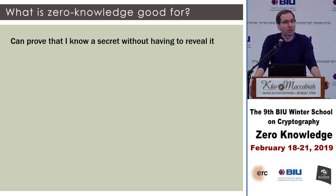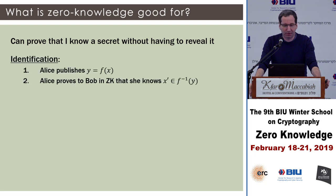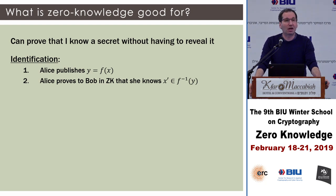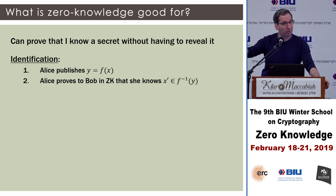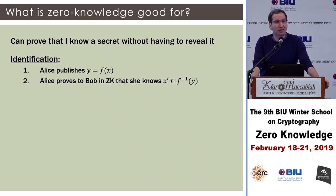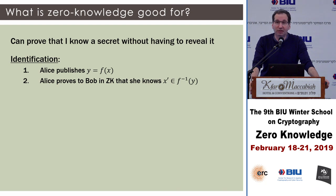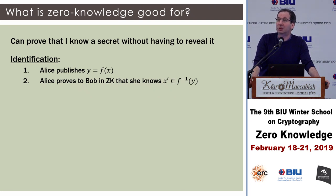So what is zero knowledge good for? Why are we all excited about zero knowledge, besides the blockchain? The first application is that you can prove you know a secret without revealing it — that's the canonical example. If Alice wants to identify herself to Bob, she picks some random secret x and publishes f(x), where f is a hard-to-invert function. Then she can prove to any Bob that she knows x in zero knowledge. This convinces Bob that she knows x — something nobody besides Alice can guess — while not enabling Bob to prove to anybody else that he knows x.